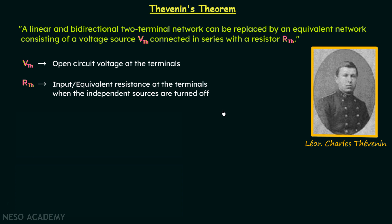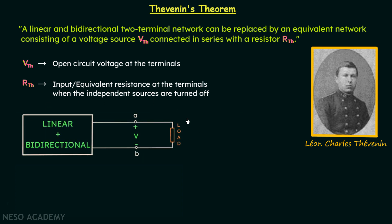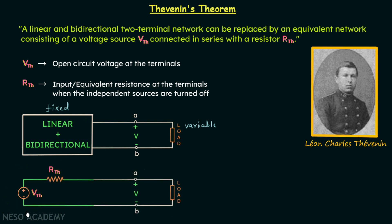To summarize, we have a linear and bi-directional network with fixed elements. From this network we get two terminals across which one variable load is connected. For simplicity, it is good to replace this network with the Thevenin's equivalent circuit, which is VTH connected in series with RTH. So here we replace the network by VTH in series with RTH.